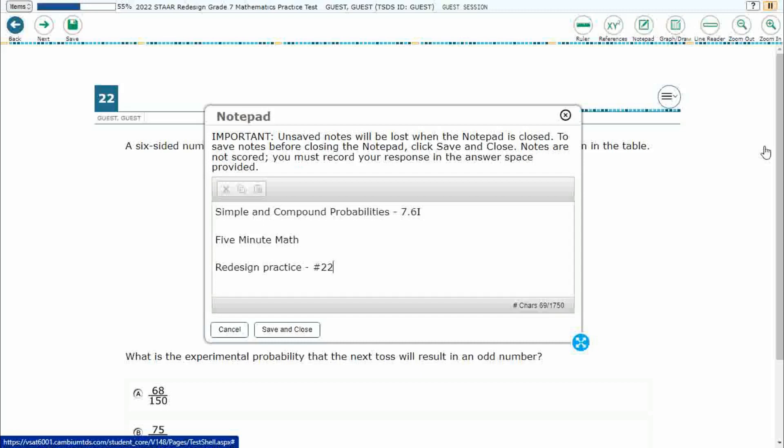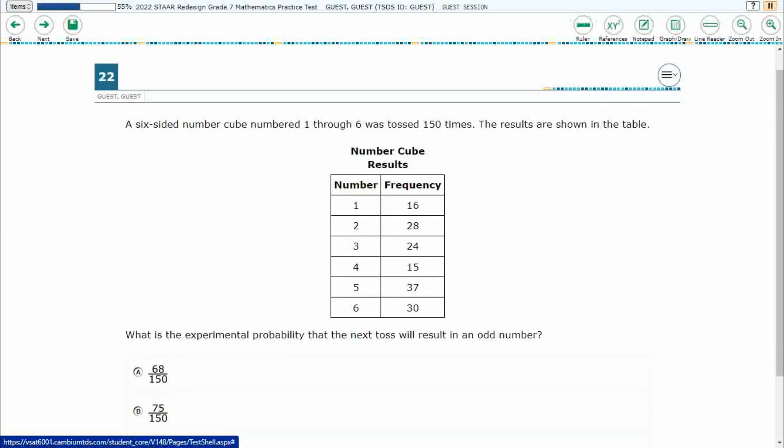Hello, and welcome to 5-Minute Math. Today we are looking at the 7th grade concept of simple and compound probabilities. This is standard 7.6i in the great state of Texas, and we are using item number 22 of the Redesign Practice Online Star Test.